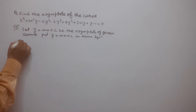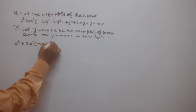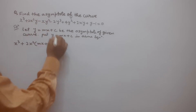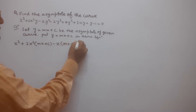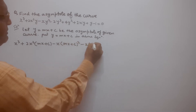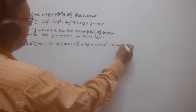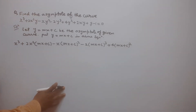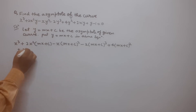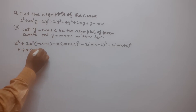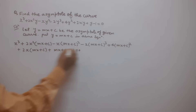Substituting y = mx + c, the equation becomes: x³ + 2x²(mx + c) − x(mx + c)² − 2(mx + c)³ + 4(mx + c)² + 2x(mx + c) + (mx + c) − 1 = 0.